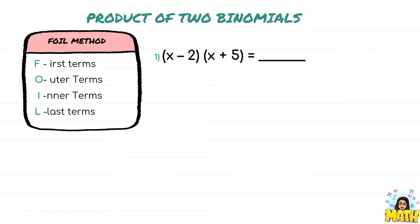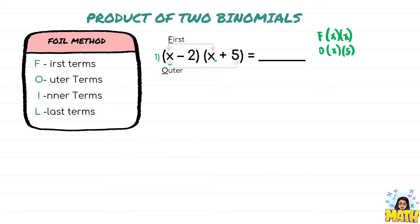For example, in this given, we need to determine which ones are the first, outer, inner, and last terms. The first terms are the respective first terms of each binomial, like x and x. The outer terms are the terms on the outside or edges of the two binomials. The inner terms are those in the very middle, like negative 2 and x. The last terms are the respective last terms of each binomial, like negative 2 and 5.